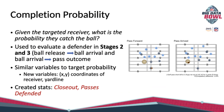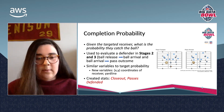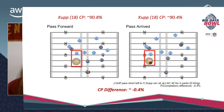Moving to completion probability, this can be used to evaluate a defender in stages two and three of the pass — from ball release to ball arrival, and then ball arrival to pass outcome. It has similar variables to target probability; we just added the xy coordinates of the receiver and the yard line as well. From this, I created two stats: closeout and passes defended, which are a sum of the differences in catch probability in the stages we're looking at, measuring how many passes a defender takes away.